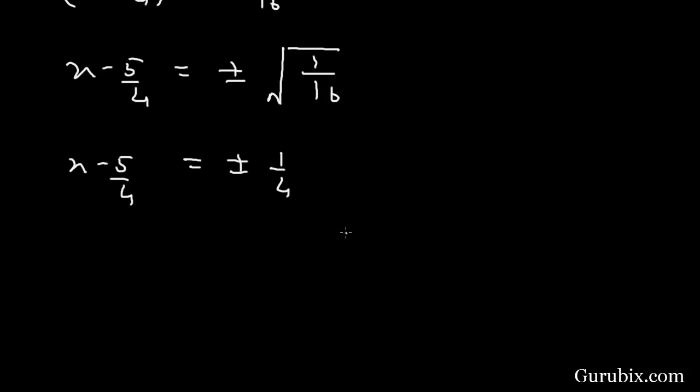Here are the two conditions. This means if we take the positive value of 1/4, then x - 5/4 = 1/4. If we take the negative value of 1/4, then x - 5/4 = -1/4.